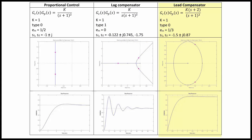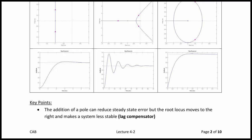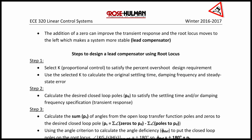Adding a lead compensator with the form K(s + 2) brings us back to a type 0 system, which means we have a steady-state error again of 1/3. However, the settling time is much faster with no time to peak. To summarize key points: the addition of a pole can reduce steady-state error, but the root locus moves to the right, making the system less stable — this is the lag compensator, which increases settling time. The addition of a zero improves the response and the root locus moves to the left, making the system more stable — this is the lead compensator, which decreases settling time.